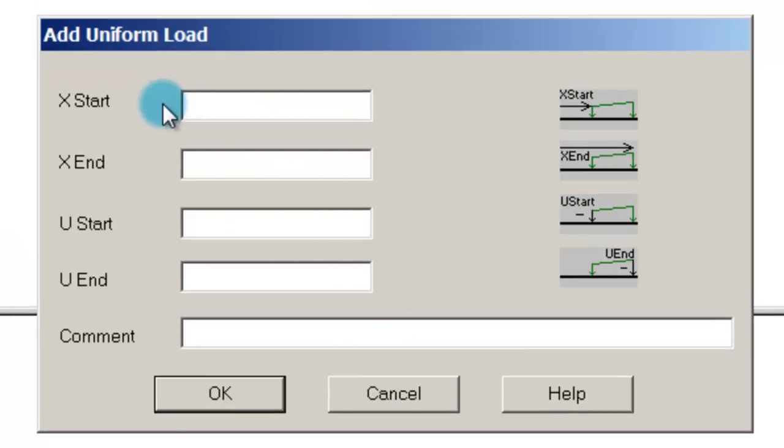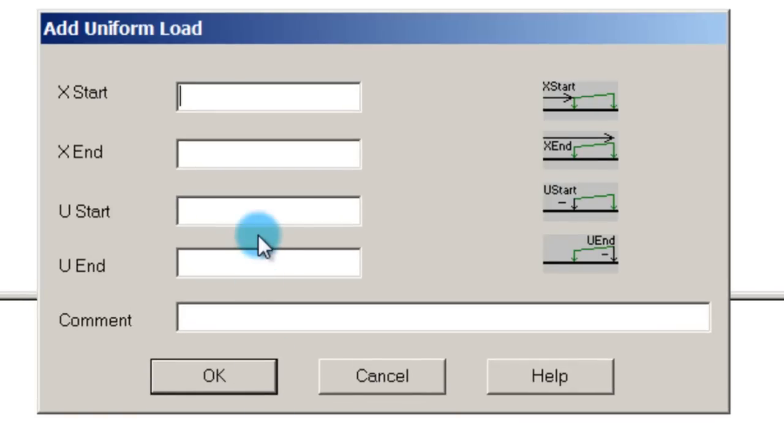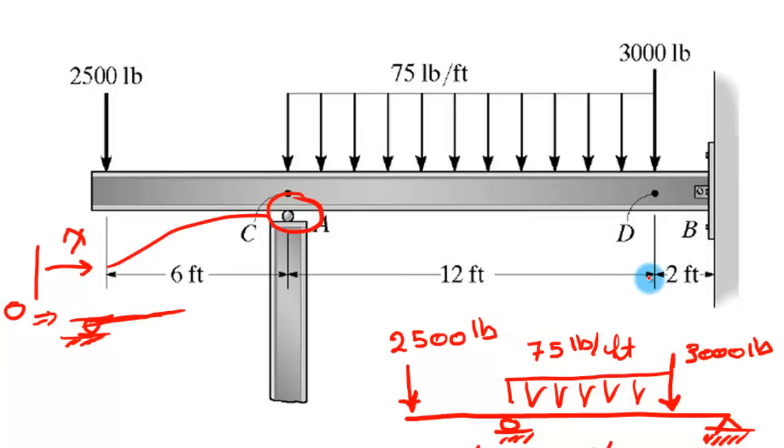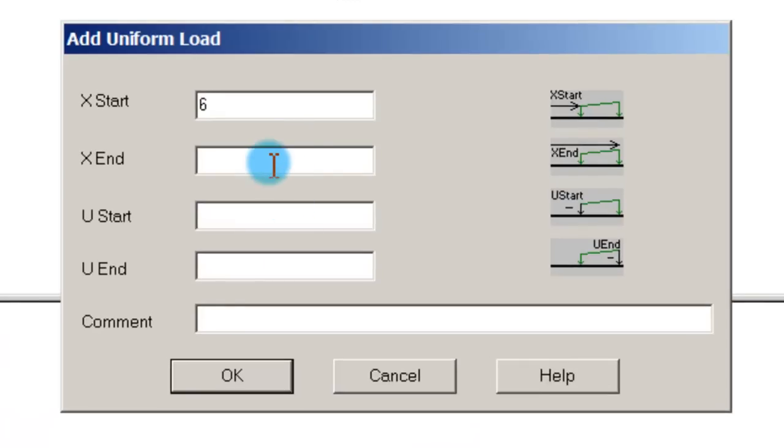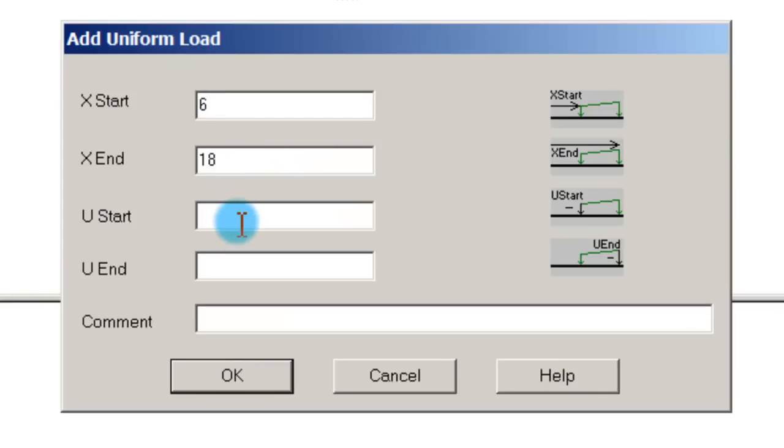Now let's do the uniform load. Where does the uniform load start? Looking at the question, it starts from x equals 6, so it's x equals 6, and it ends at x equals is it 12? No, 18. So at x equals 18. What is the value of the load? It's 75. So it's negative 75. It's negative 75 and starts with negative 75 and it ends with negative 75.